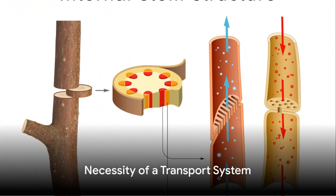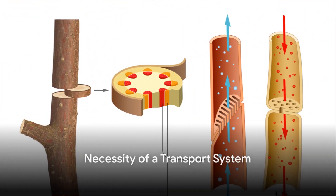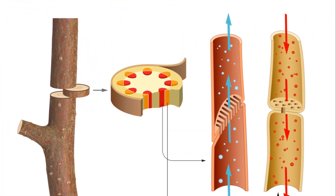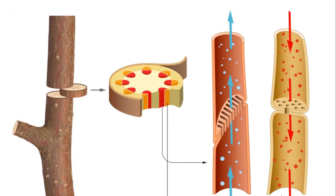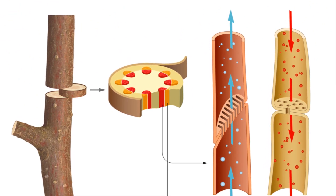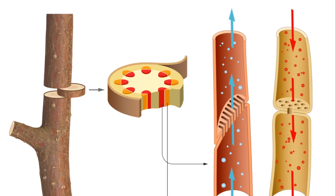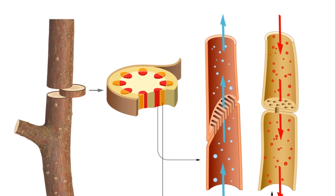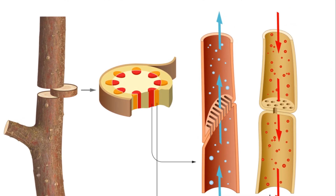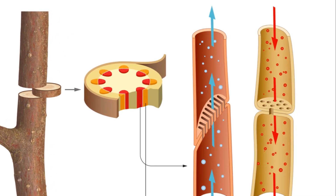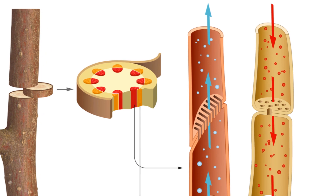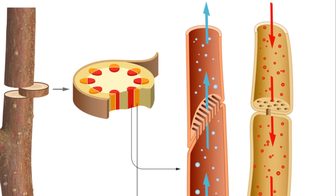First, we need to understand why a transport system is necessary for plants. Being multicellular organisms, the much-needed water and food nutrients wouldn't get far without a transport system. Thus, plants need a system to distribute water and mineral nutrients which are absorbed by the roots, as well as the sugars which they produce through photosynthesis, to all their parts. This system also helps in the removal of waste materials.